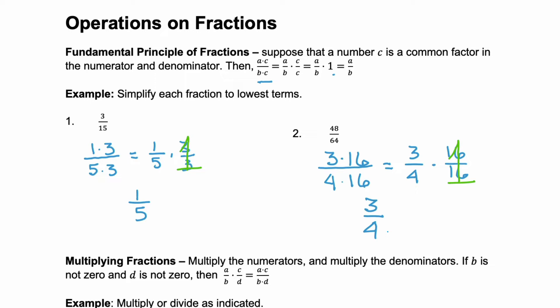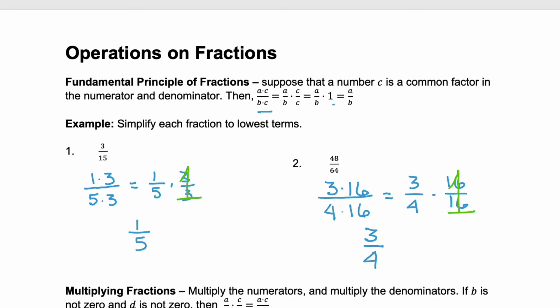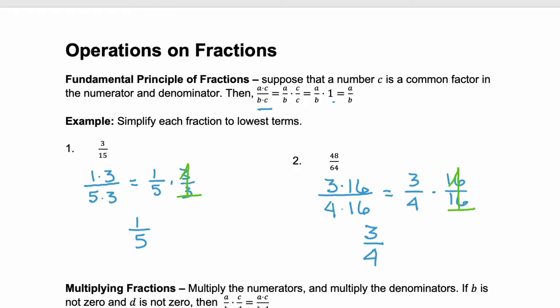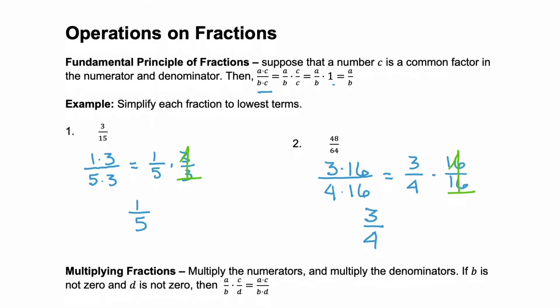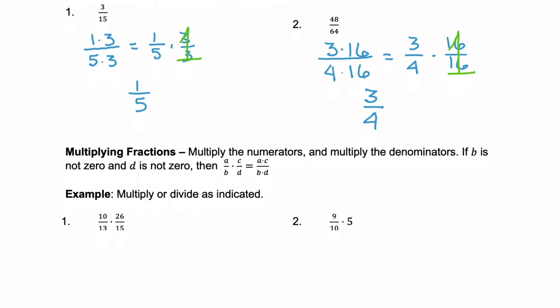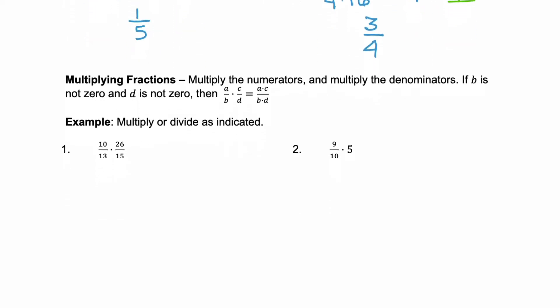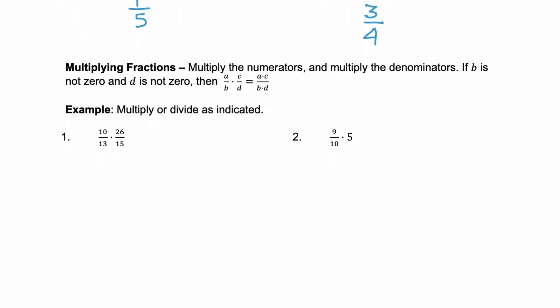Now keep this principle in mind as we go through the actual operations on fractions. The first operation we're going to look at is multiplication. When you multiply fractions, you multiply the numerators and you multiply the denominators — you're going to multiply straight across. And when I multiply, I like to factor those fractions first and then multiply because it helps me simplify.